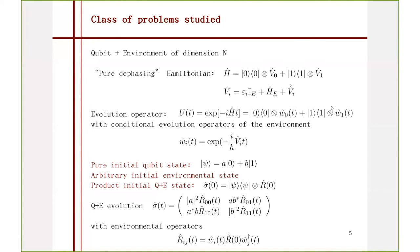It's the standard Hamiltonian for pure dephasing. The trick is that your qubit Hamiltonian has to commute with your interaction term, and then you will have pure dephasing. The characteristic thing about this Hamiltonian is that it has eigenstates which are separable. And because of this nice form, you can find the evolution operator in a slightly less general way. You will find the full evolution operator that looks like this. This means that if your qubit is in state zero, this operator tells you what happens on the environment. And these W's are what I will be calling conditional evolution operators of the environment.